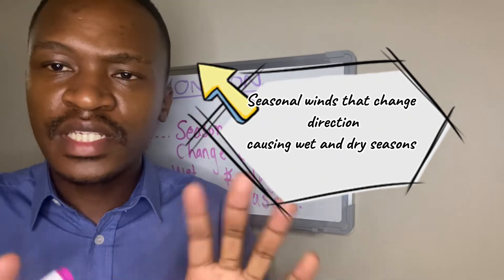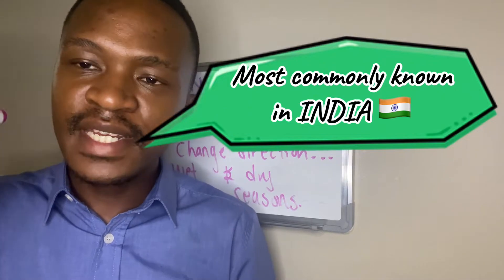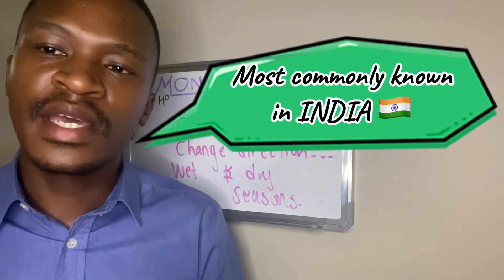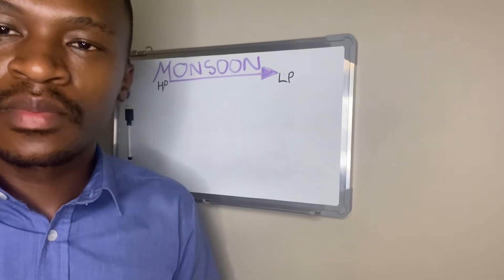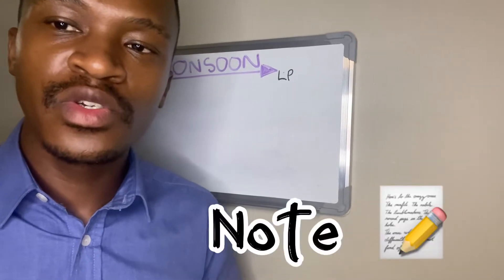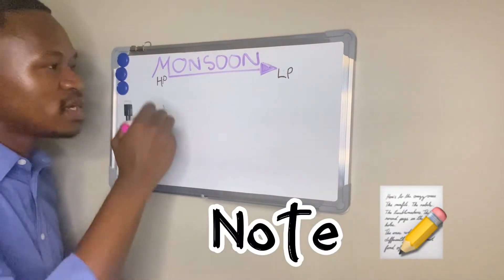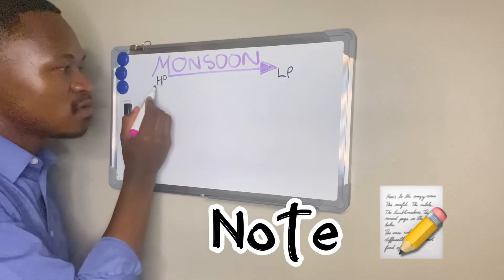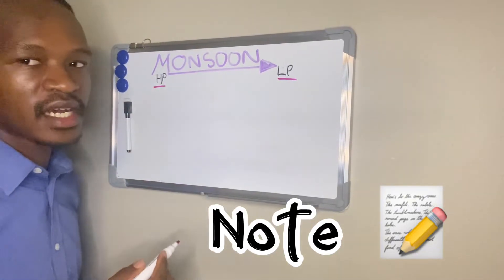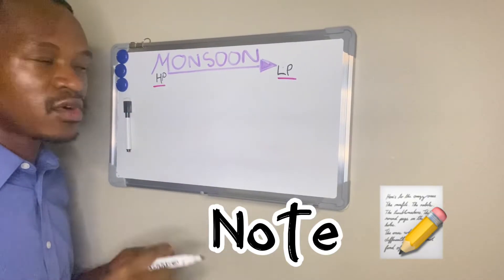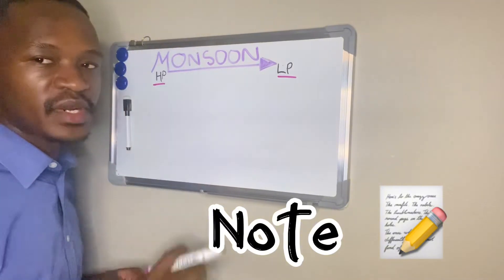Monsoon winds occur in certain regions in the world, but they are most common in India. Before we dive into this topic, you need to know that wind will always go from a high pressure to a low pressure.